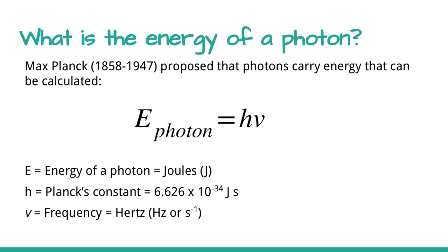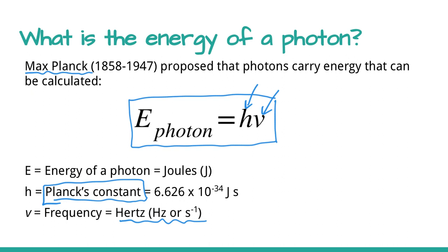Let's begin with an equation that was derived by Max Planck. He proposed that photons carry energy that can be calculated using the equation energy of a photon equals Planck's constant multiplied by the frequency of the photons.